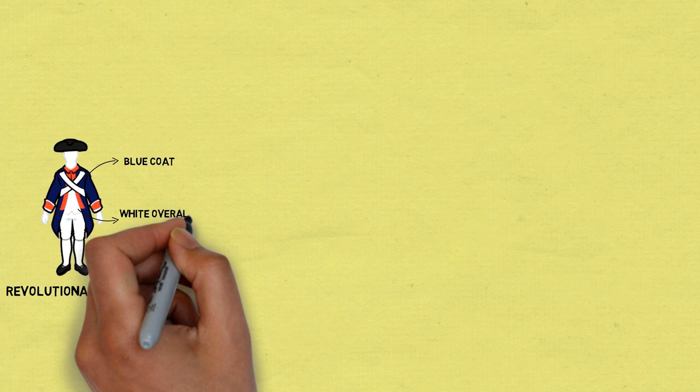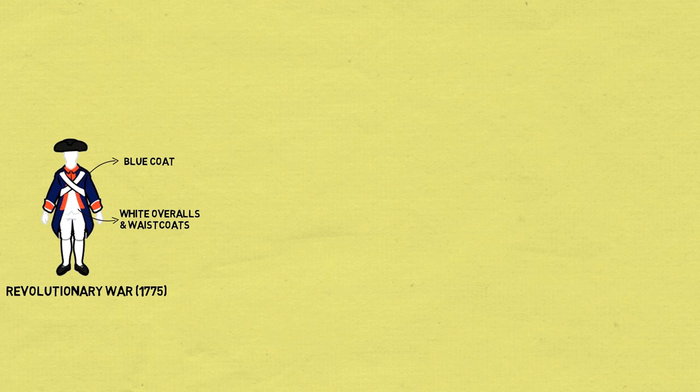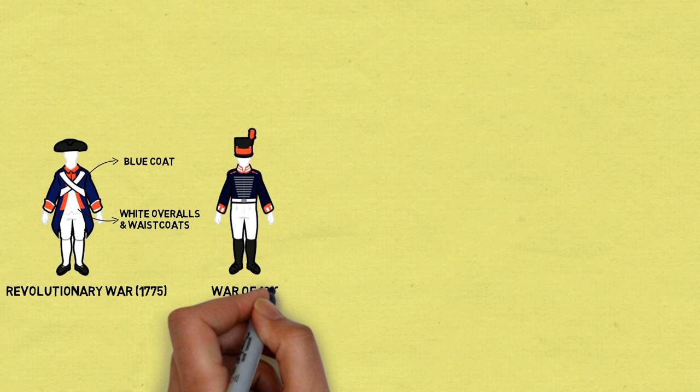The US Army uniform was based off of that of the British military. The Continental Army uniform was distinguishable by its blue coat. Additionally, the uniforms were paired with white overalls and waistcoats.